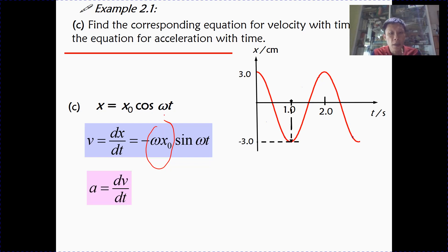How about acceleration? For acceleration, it is the rate of change of velocity with time. So all you need to do is differentiate again. Differentiate the expression for velocity. So by differentiating sine, you get cosine. And you bring out the omega again. So the amplitude of the acceleration is omega squared x0.